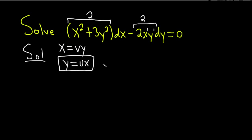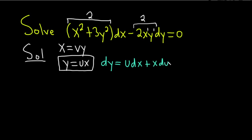Now we're going to compute dy by applying the product rule. Differentiating y equals ux gives us dy equals u dx plus x du. You can verify it — it's just the product rule for differentiation.